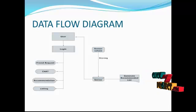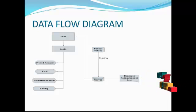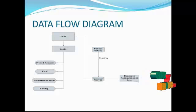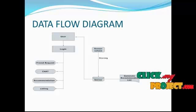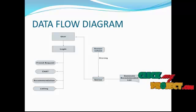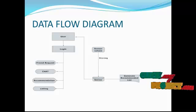The next module is the listing module, which is used to store the list of people using this application. The next module is sensor values. The sensor value module is used to get the user's life cycle data through the sensor. After getting the life cycle values, the data is stored in the server. After storing the life cycle values, the server analyzes the sensing data and then generates the recommendation for users.